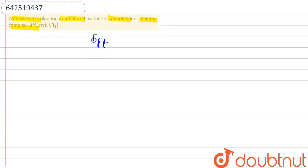The complex given to us is platinum where we are having EN2, CL2. Now first of all, we have to find the coordination number. We should know what exactly is coordination number.